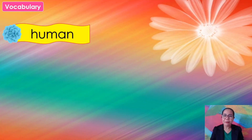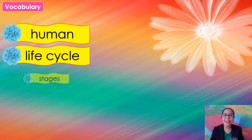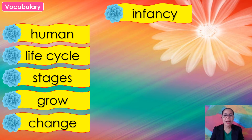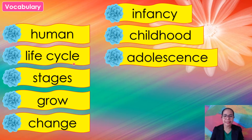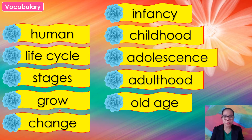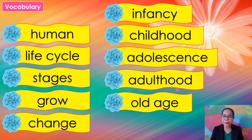For our vocabulary, you are going to say each word two times. Human. Life cycle. Stages. Grow. Change. Infancy. Childhood. Adolescence. Adulthood. Old age.